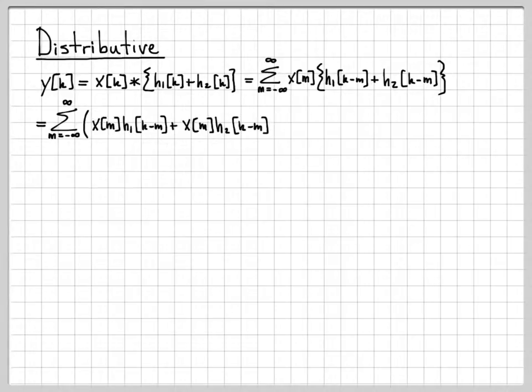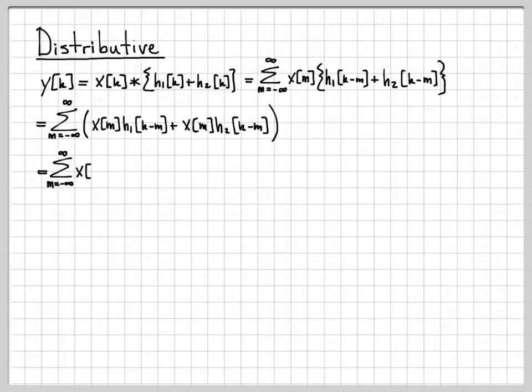We can distribute multiplication across the two pieces. So instead of writing it as x times the quantity h1 plus h2, we distribute the x to write it as x times h1 plus x times h2, because multiplication is distributive. Now we have this sum, and instead of writing it as a summation of two things together, we can write it as two separate summations by distributing the sum across those two parts.